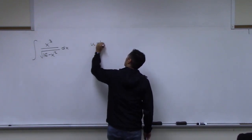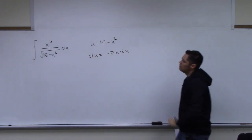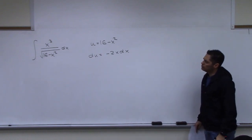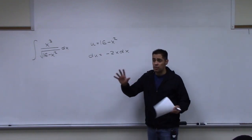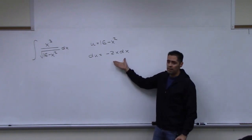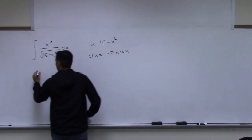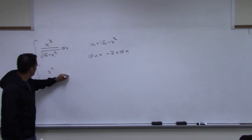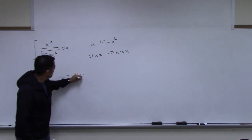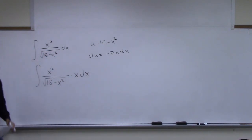You just replace it. For x cubed, you can rewrite it as x squared times x. You split x cubed up so you can see the x dx. Then scale both sides to match: the x squared on top gets replaced by solving u equals 16 minus x squared for x squared.